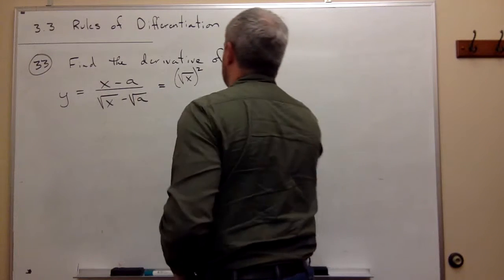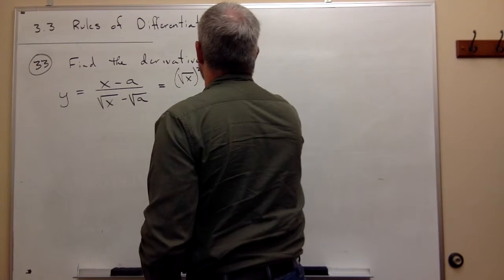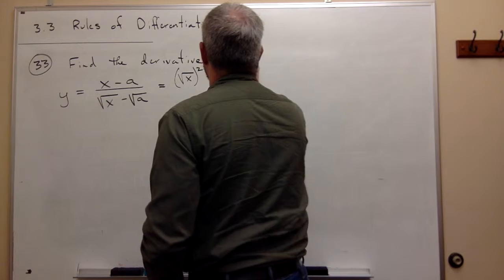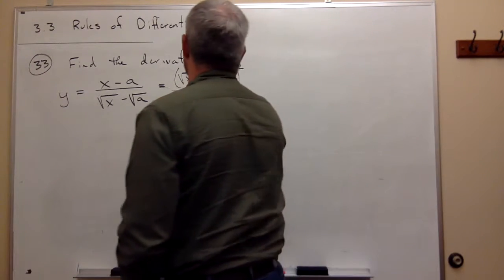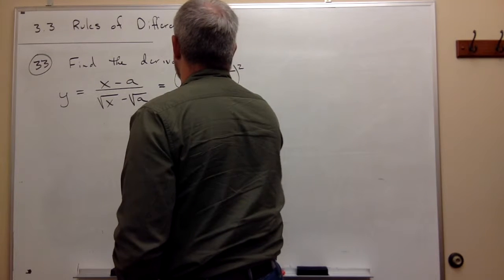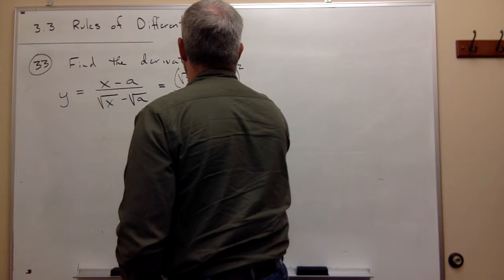And a is the same as the square root of a quantity squared divided by the square root of x minus the square root of a.